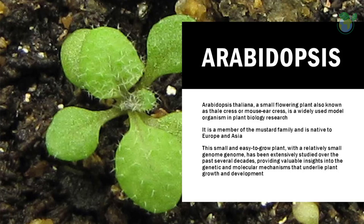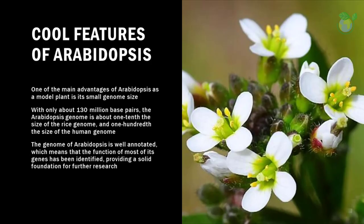Introducing the model plant. Arabidopsis thaliana, a small flowering plant also known as thale cress or mouse-ear cress, is a widely used model organism in plant biology research. It is a member of the mustard family and is native to Europe and Asia. This small and easy-to-grow plant, with a relatively small genome, has been extensively studied over the past several decades, providing valuable insights into the genetic and molecular mechanisms that underlie plant growth and development.